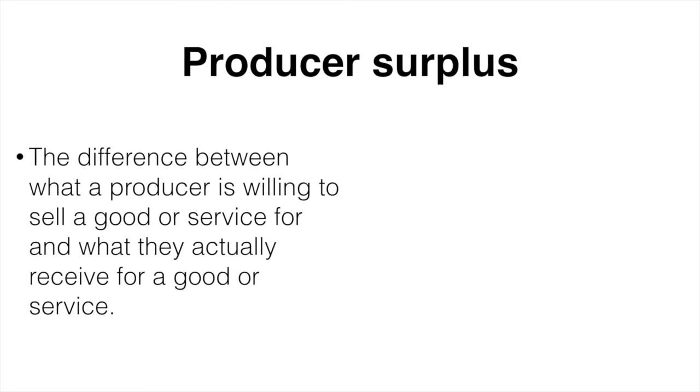The textbook definition is the difference between what producers are willing to sell a good or service for and what they actually receive for that good or service.